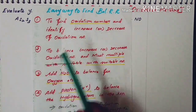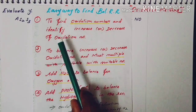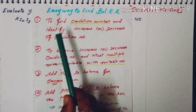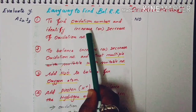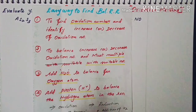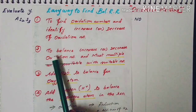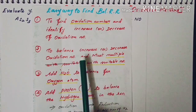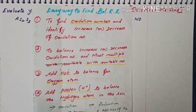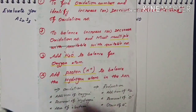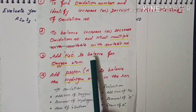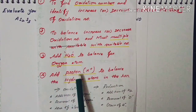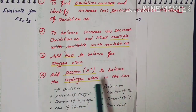The first trick is to find the oxidation number for the given reaction and identify whether it increases or decreases. The second trick is to balance the increase or decrease in oxidation number and multiply with a suitable number. The third point is to add water to balance oxygen atoms and add protons to balance hydrogen atoms in the reaction.